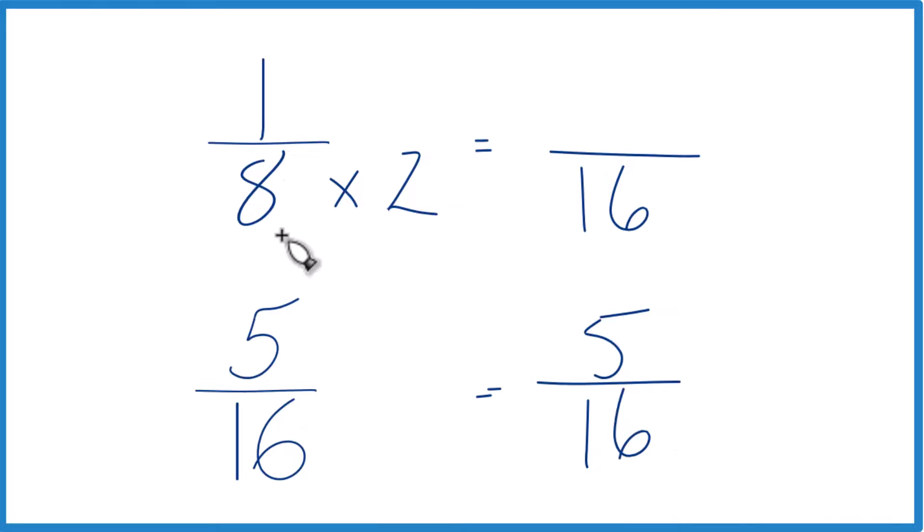But I can't just multiply the denominator by 2. I also need to multiply the numerator by 2. It's because 2 over 2 is just 1, so I don't change the value, just the way it's represented. 1 times 2 is 2. And 2 sixteenths, that's equivalent, an equivalent fraction to 1 eighth.